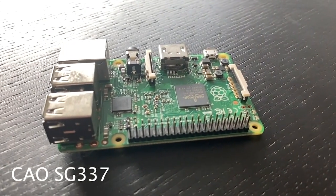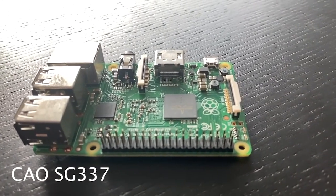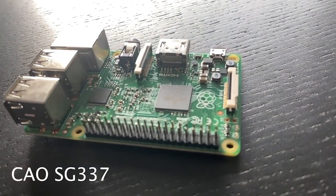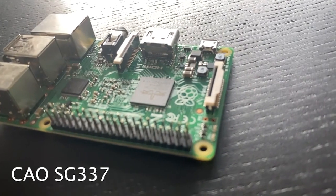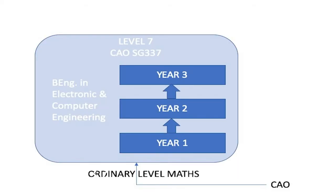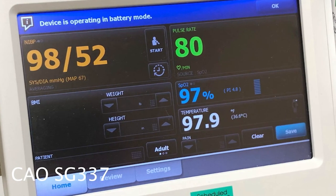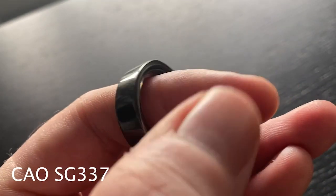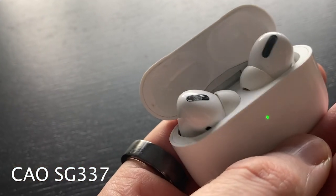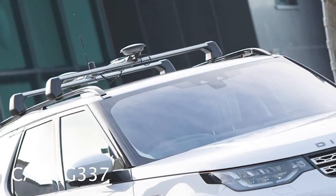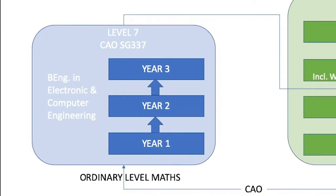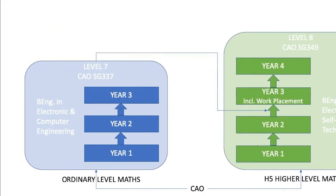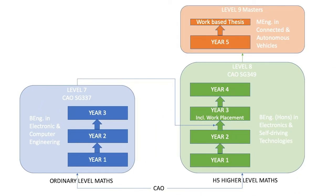If you are interested in technology or engineering, but are not doing higher level maths, why not consider our level seven in electronic and computer engineering. This is a three year programme that looks at the design and development of embedded electronic systems. These are the medical devices that keeps us healthy, the consumer devices that keeps us entertained, or the controlled systems that keeps us safe on the road. You can then progress onto the level eight electronics and self-driving technologies, and from there to the masters. Check out the link below for more information.